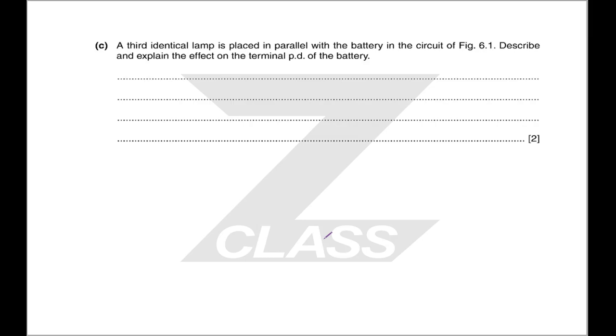A third identical lamp is placed in parallel with the battery. Describe and explain the effect on the terminal potential difference of the battery. If we add a third identical lamp, our total resistance is going to be decreased even further. And so we are going to get more current through our circuit. We are going to waste more voltage across our internal resistance. And therefore, the terminal potential difference, which is what's left after you've wasted some on the internal resistance, is going to go down. That is a general relationship. As your current goes up, your terminal potential difference goes down.